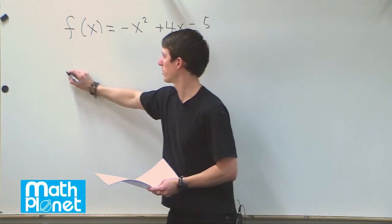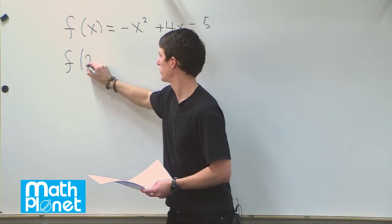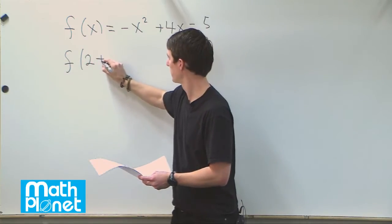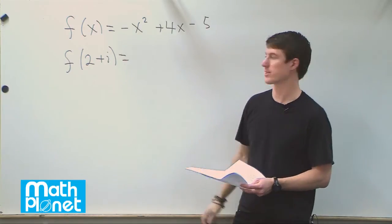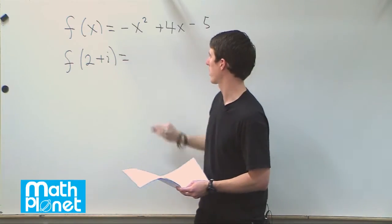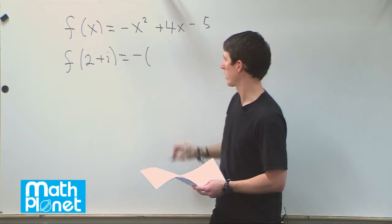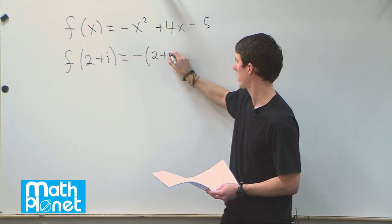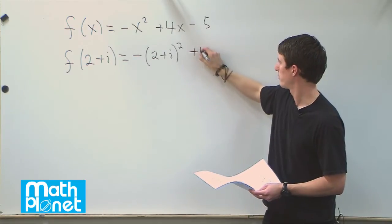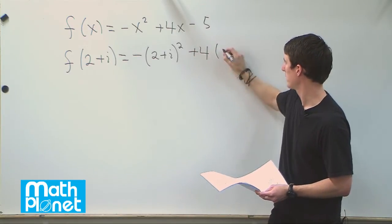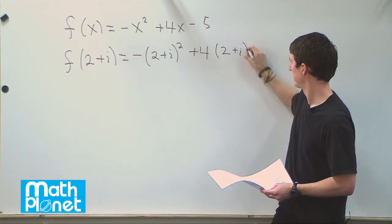So let's begin with f of 2 plus i. So we'll just evaluate this function, replacing x with this zero here, this 2 plus i. So minus quantity 2 plus i, quantity squared, plus 4 times 2 plus i, minus 5.